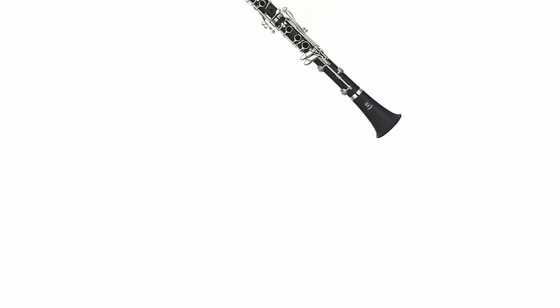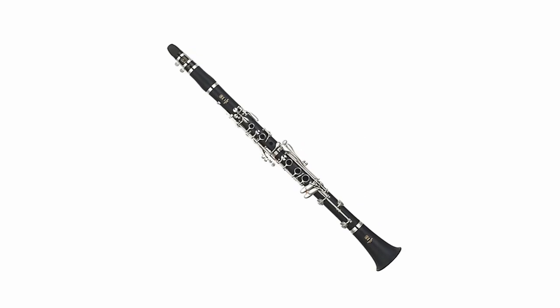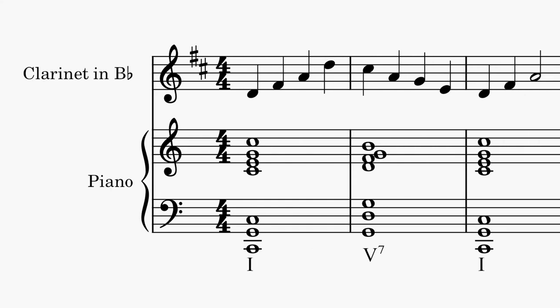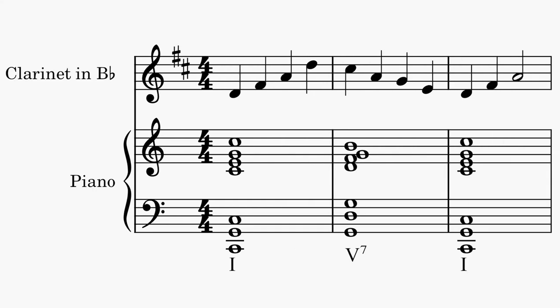An example would be the B flat clarinet, which sounds a major second lower than written. So if you want to compose in the sounding key of C major, you will have to give your clarinet the key signature of D major to compensate for the transposition.